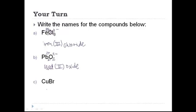Finally, CuBr. Cu is copper — a transition metal. Bromine turns into bromide. Bromine has a charge of minus one, which means copper had a charge of plus one to balance them out. So there's a Roman numeral I: copper(I) bromide.